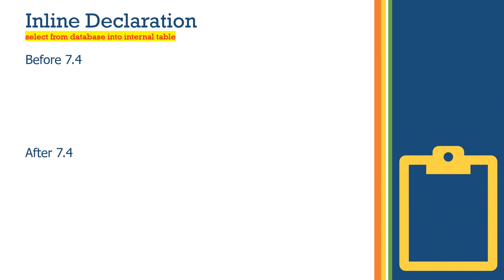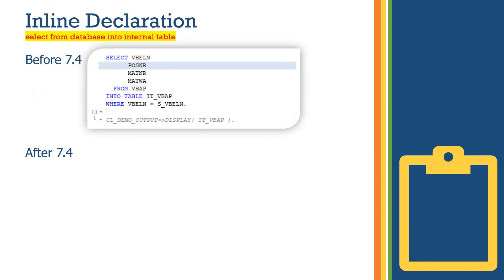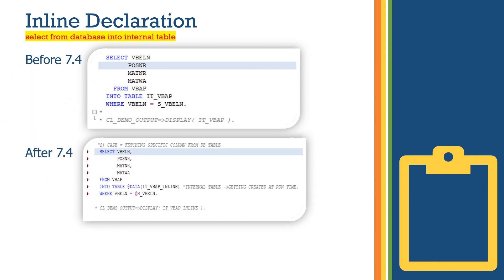This is the inline declaration — selecting from a database into an internal table using the latest ABAP 7.4 syntaxes. How it used to be before 7.4: you would select fields from the database table into a table with a where clause. Now, with inline declaration, we don't have to pre-declare because the internal table IT_VBAP_inline gets created at runtime.